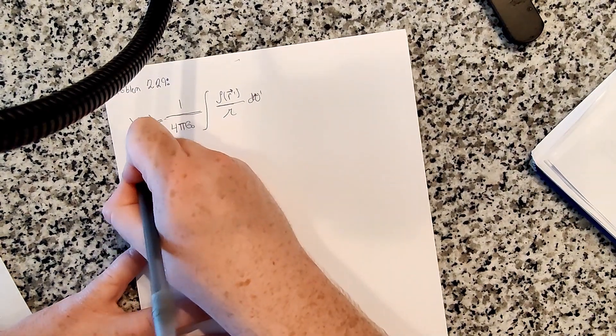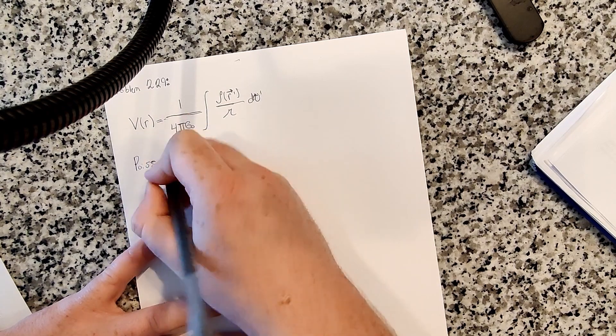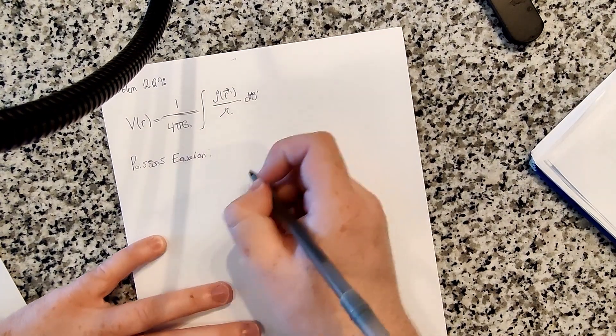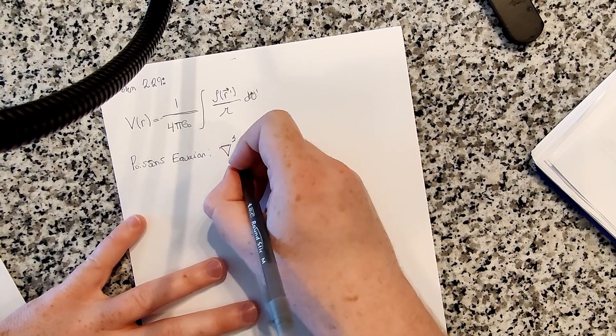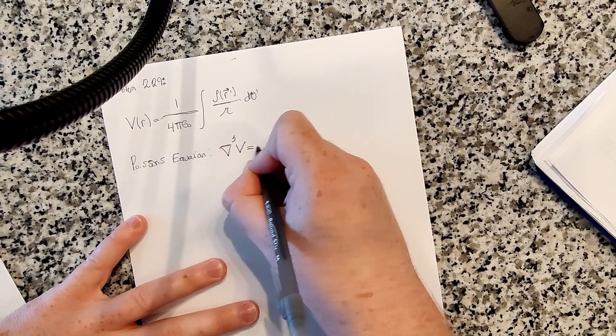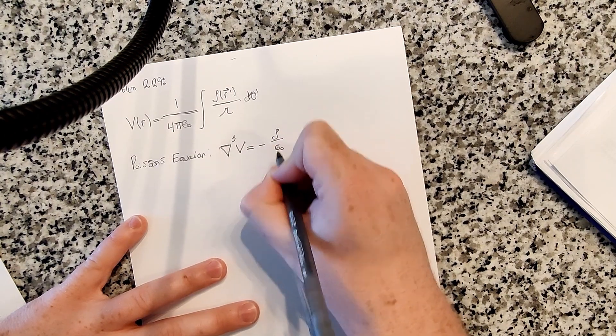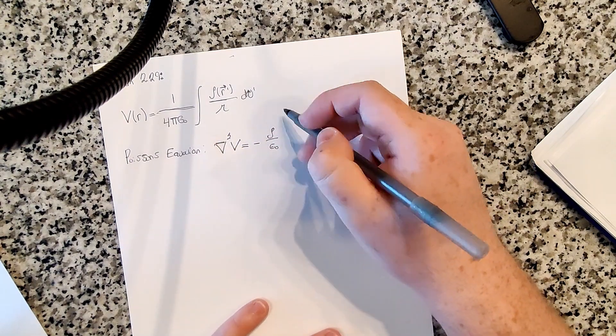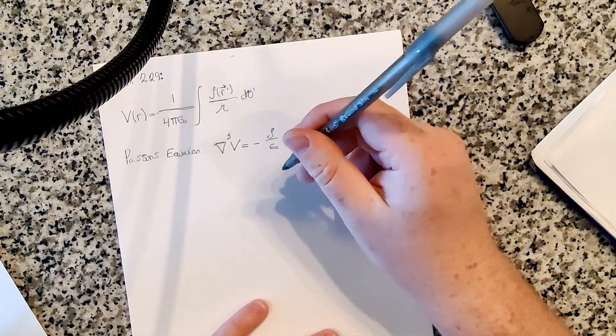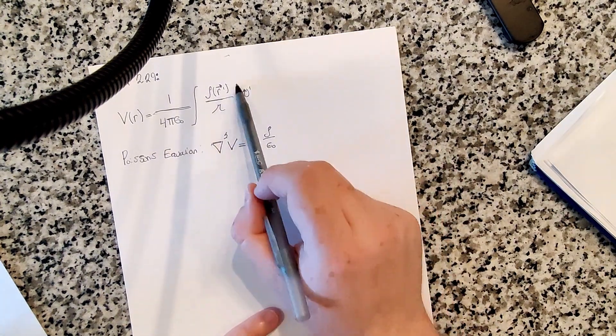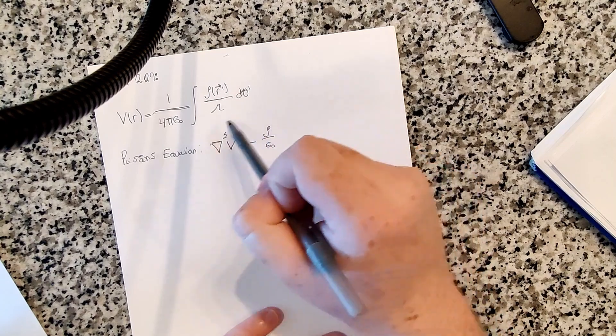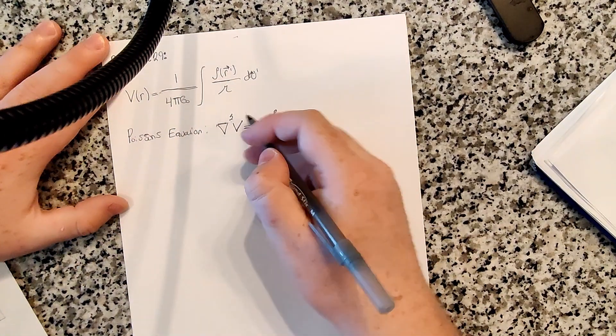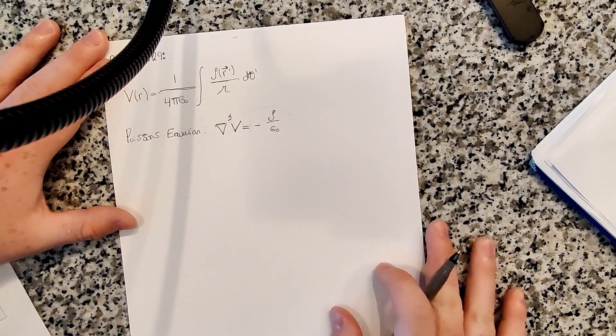So Poisson's equation is an equation that relates the potential to the charge density. So it says that the Laplacian of the potential is equal to minus rho over epsilon naught. This is essentially the differential form of Gauss's law. That's basically what this is. So essentially what it wants us to do is to show that this potential, this form of the potential, satisfies this equation. So essentially what we need to do is, we have our potential, so we need to take the Laplacian of the potential and check that it gives us this side over here.